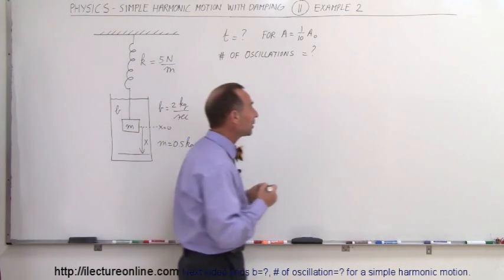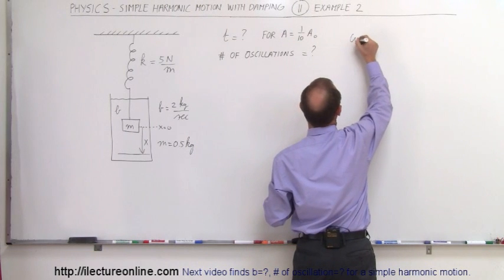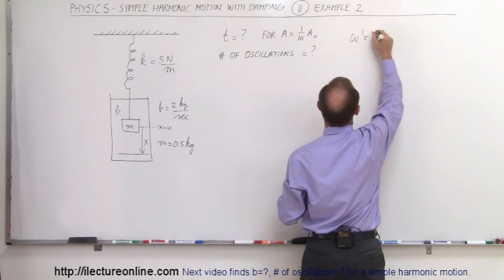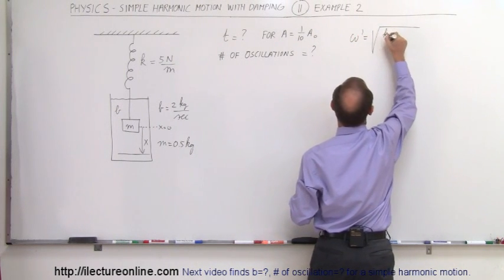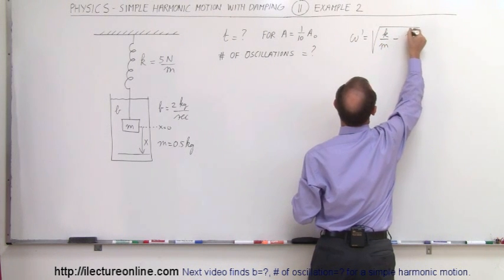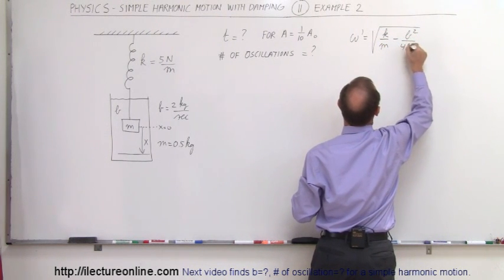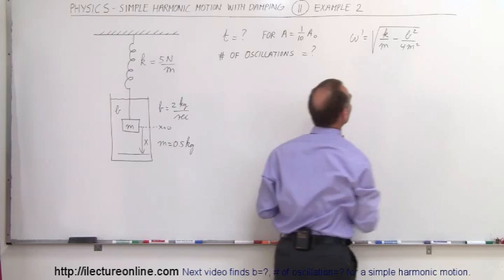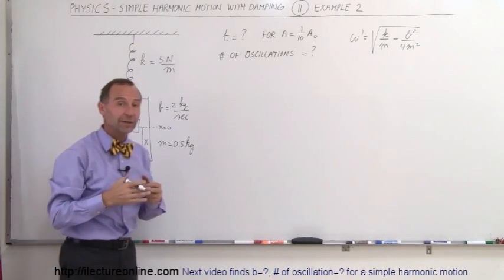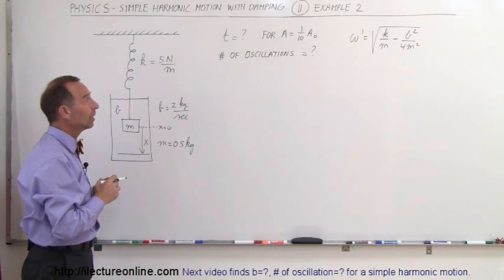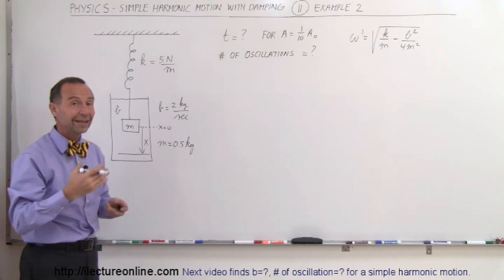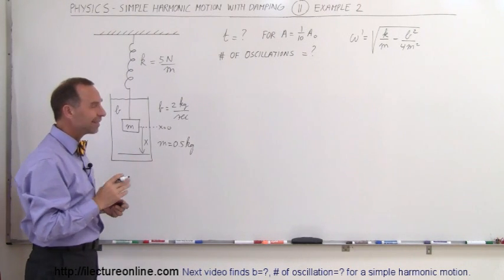Well, first of all, we need to know the frequency equation. And of course, the new frequency with damping is equal to the square root of k over m minus b squared divided by 4m squared. So that will give us the frequency, and from that we should be able to figure out the number of oscillations in the time that it takes to go to 1 tenth of its original amplitude.